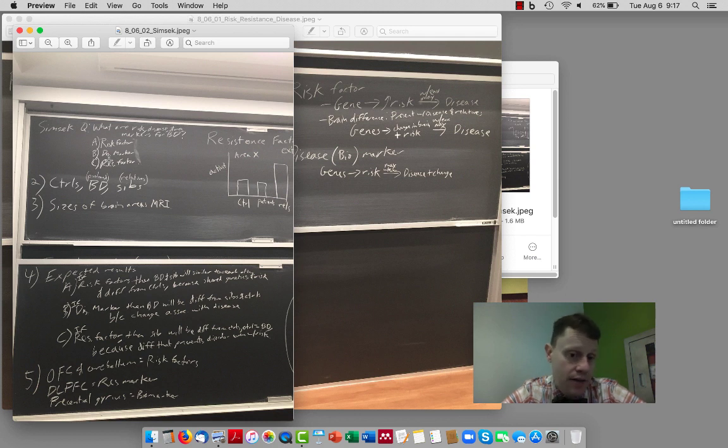And in this case, they were measuring sizes of brain areas instead of activity differences. And then for risk factors, we expect those things to be common, something that's different from controls, which is common between both the patients and healthy siblings. And that's because it shows, this is because of the genetics and associated with the risk of disease.